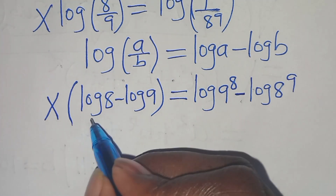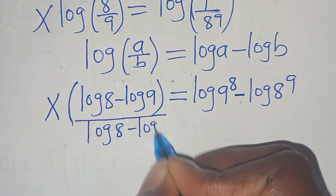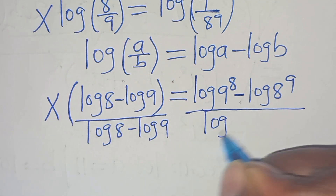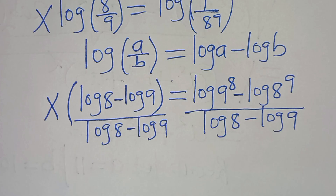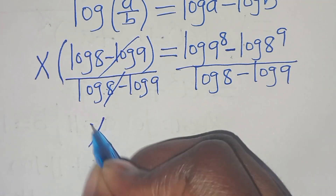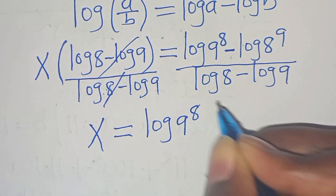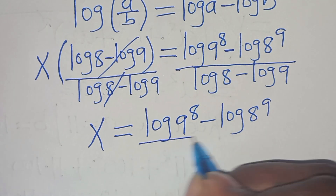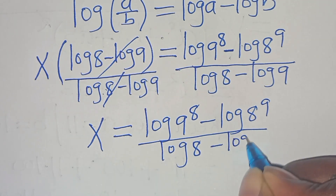Dividing both sides by (log 8 minus log 9), and simplifying, x equals log(9 to the power of 8) minus log(8 to the power of 9), divided by (log 8 minus log 9).